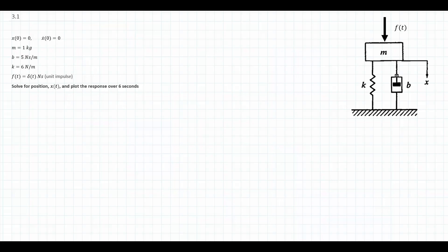Where we want to go is to find x of t — the position of this mass — and we're going to simulate it over six seconds to see what the behavior of the mass looks like when we give it this impulse. We'll begin with a free-body diagram, which we'll use to develop our equation of motion, which is an ordinary differential equation we'll solve for x of t.